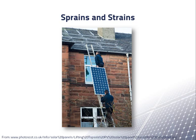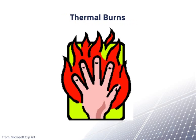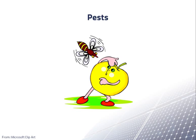Sprains and strains. These injuries can result from lifting and carrying. Thermal burns. Burns from hot objects can be caused by materials or equipment left out in bright sunlight. And pests. Insect stings and distractions can be problems themselves, and can lead to other accidents.